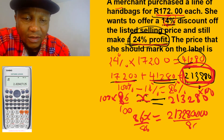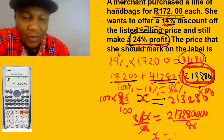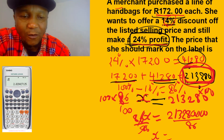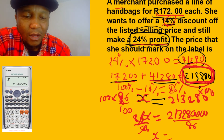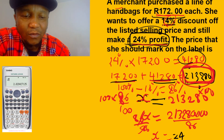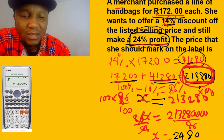Plug that into the calculator and it gives us approximately 248. So the marked label price should be 248.